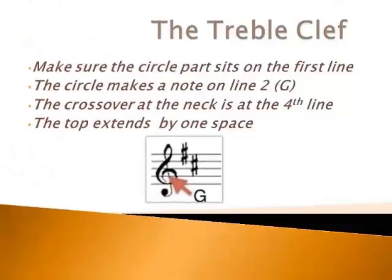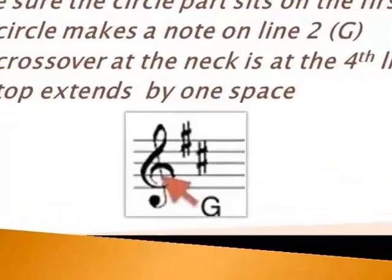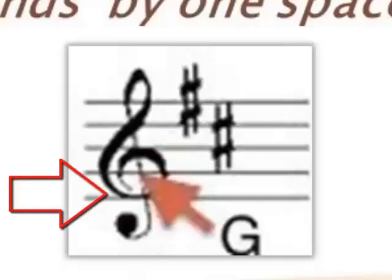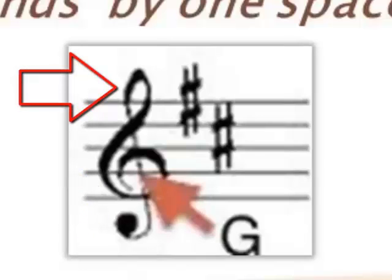When you draw our modern treble clef, there's a few things that you always want to remember when you're drawing it. That line we saw on the previous slide is still there. That's our G line. So what you want to do is make a little note on that G line, which is line two. That way that G becomes one of our landmark notes. Make sure that the circle part at the bottom is sitting right on the first line. And also the top is extending by one space. So it's also called the G clef, and it shows us where G is.